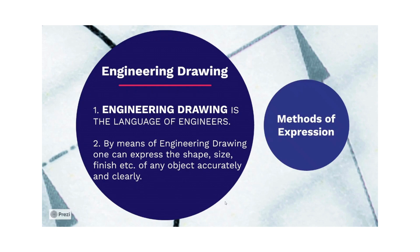By means of engineering drawing, one can express the shape, size, finish, and other details of an object accurately and clearly. For example, when building a home, without a plan a building may end up as a straight line or cross line. With a proper plan — a square or rectangle layout specifying room dimensions, length, breadth, number of steps, and step sizes — everything can be included and executed correctly.